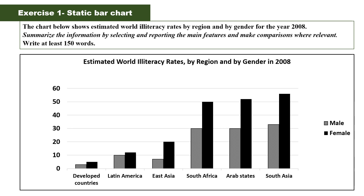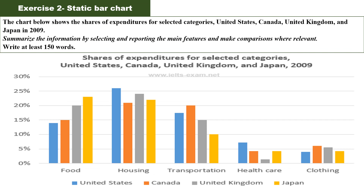Then write about males in one paragraph and females in another. Try writing this yourself. The next practice graph, which we have already discussed in class, shows the expenditure of four countries as a percentage of GDP on housing, food, transportation, healthcare, and clothing. This is another static bar chart. The only difference between graphs is the language. So go back to the video, learn the language, and try to write one or two graphs on your own and you'll be good to go.